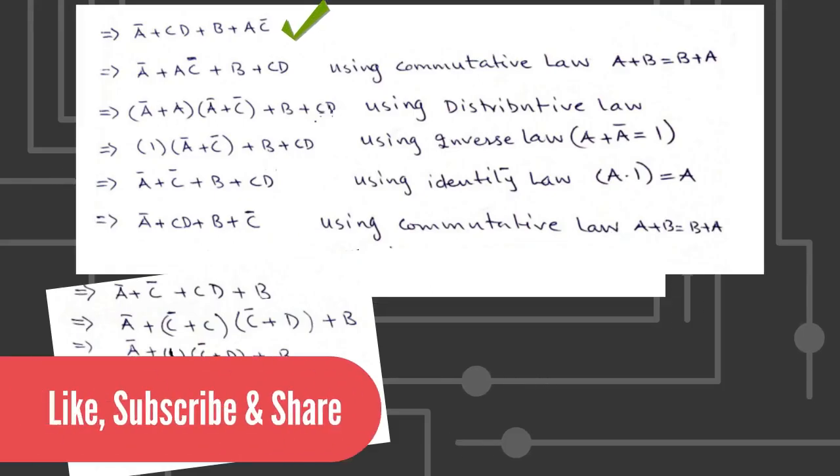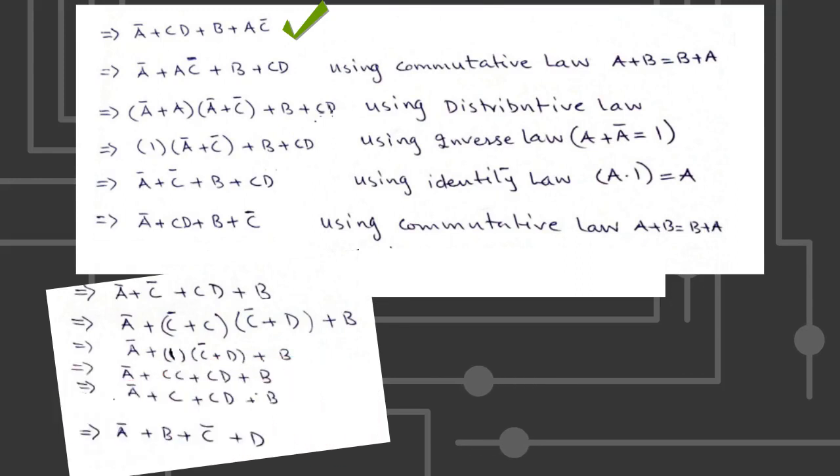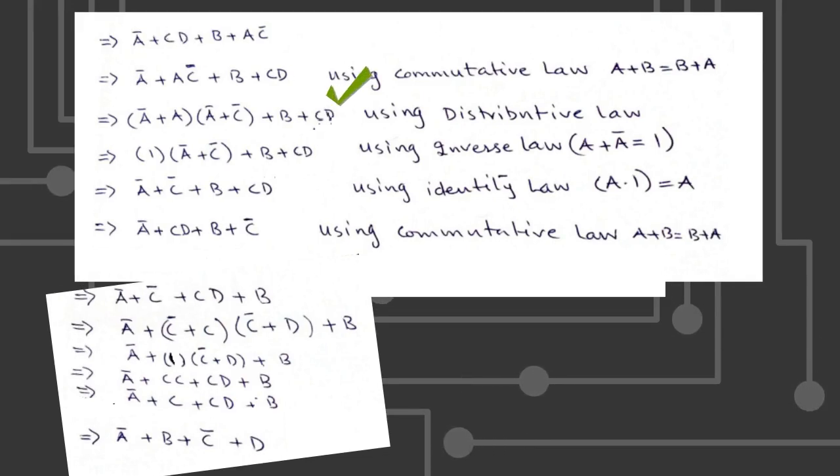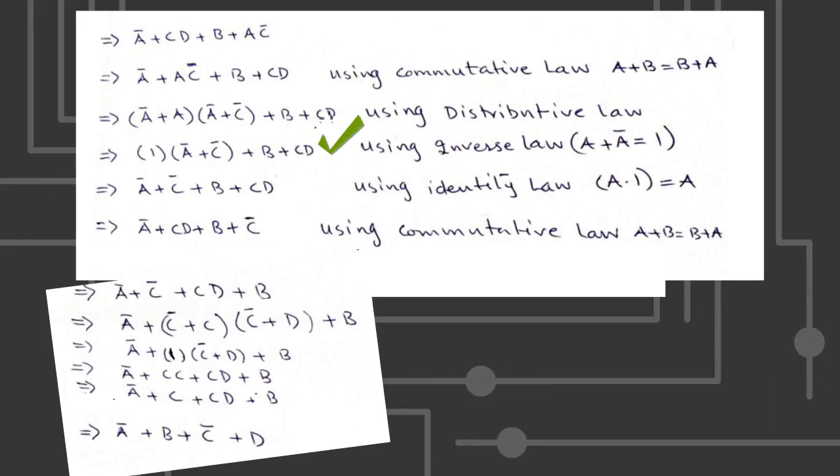Now we have A bar plus CD plus B plus AC bar. Using commutative law, we can rearrange it in this form. Now, first two terms can be replaced using distributive law and inverse law.